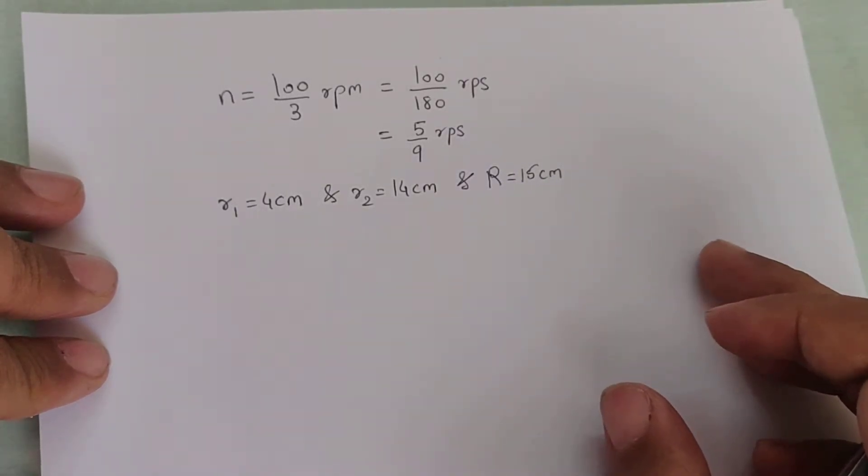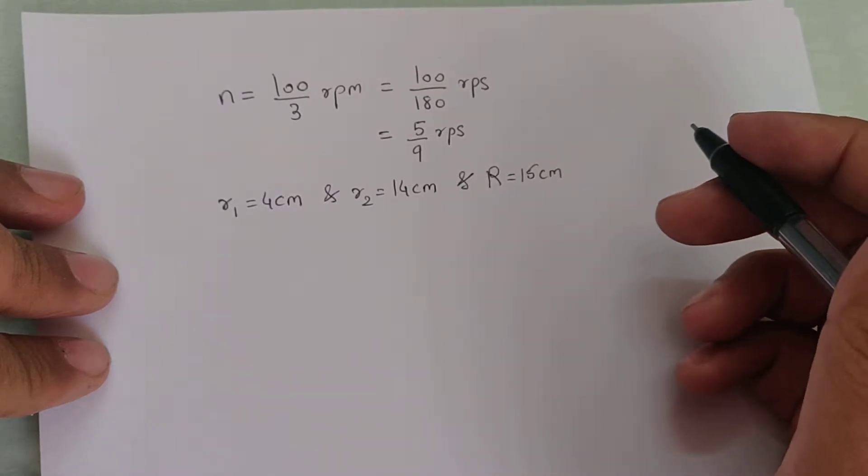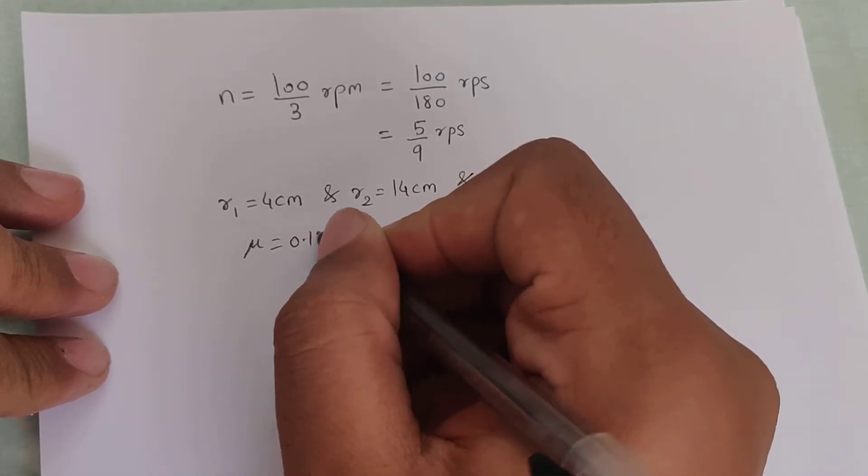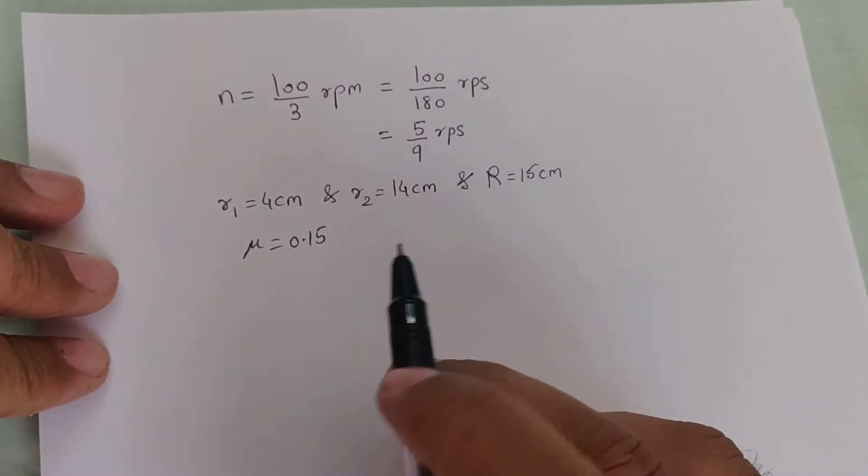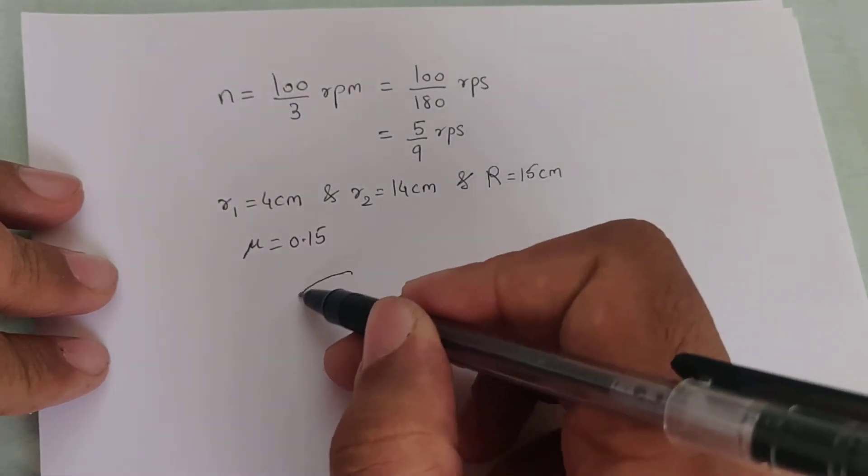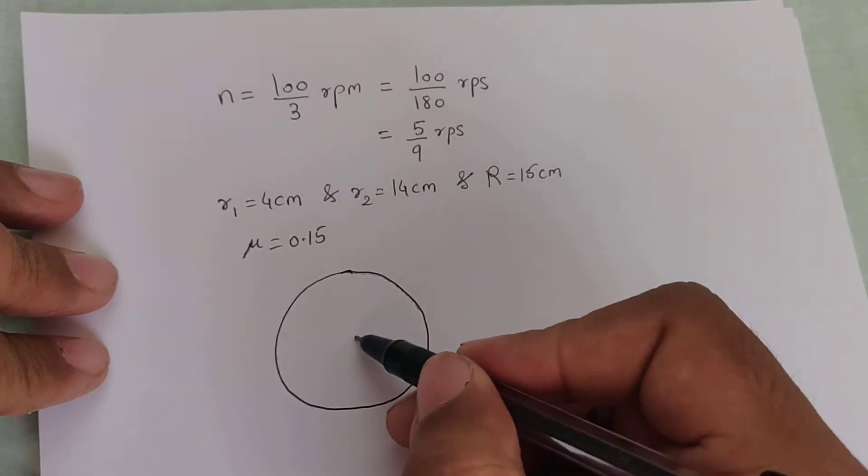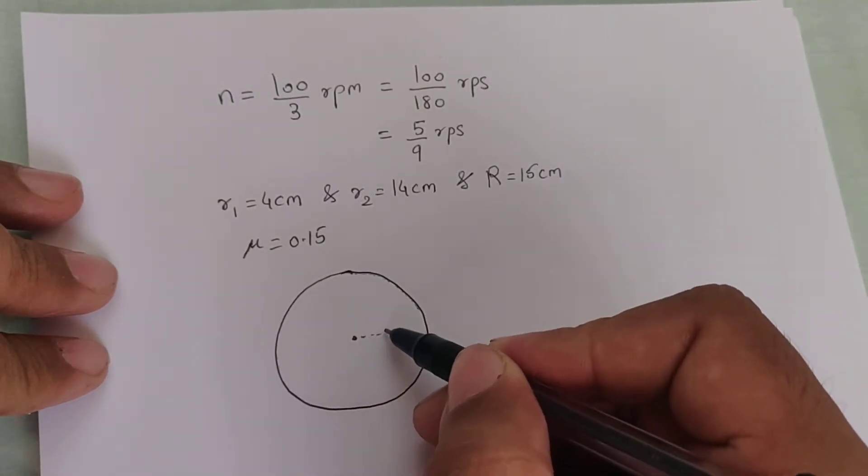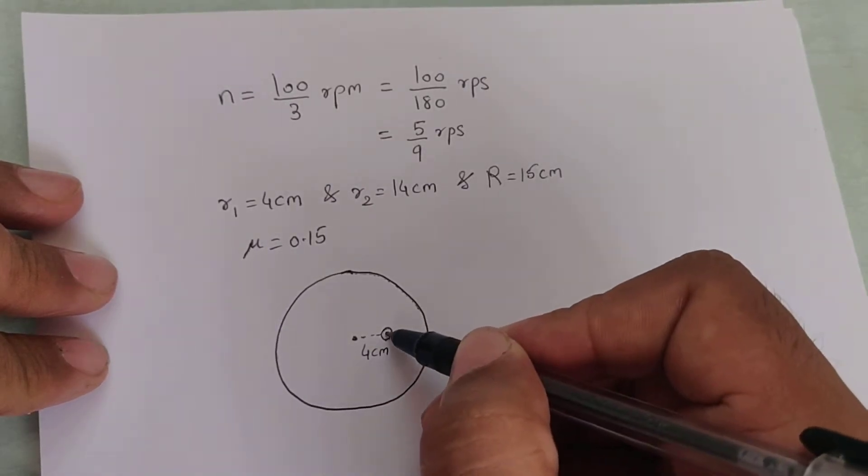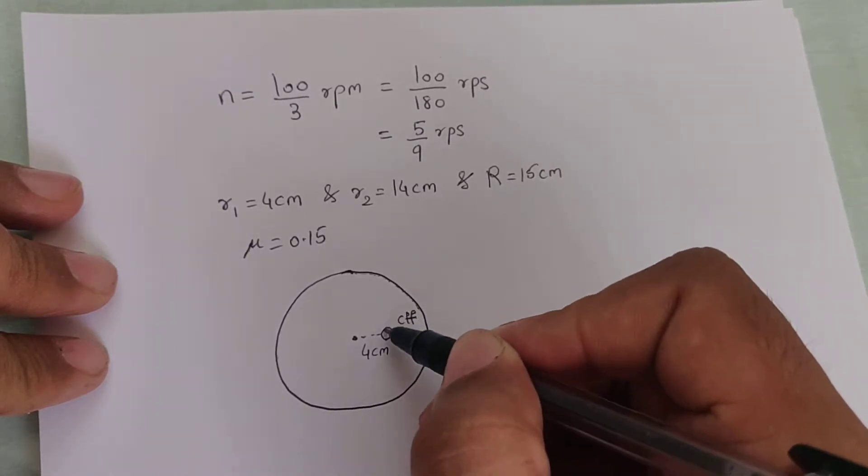The coefficient of friction between the coins and the record is 0.15. Which of the two coins will revolve with the record? So they have given mu as 0.15. If I assume this to be the record, the first coin is at a distance of 4 centimeter, so it is going to experience a centrifugal force along with a friction force which tries to balance it.